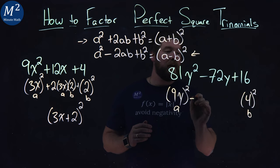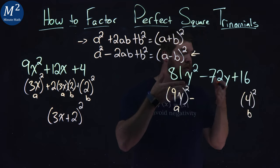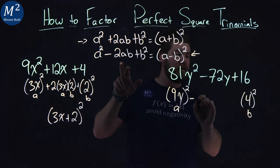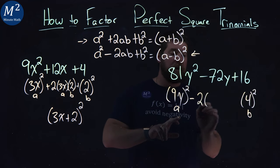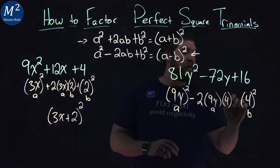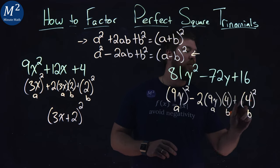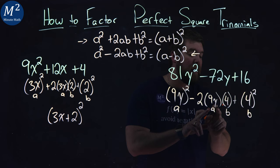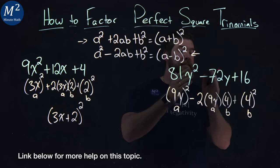Does it line up when we have 72y? Using our formula here, 2 times an a value, 9y, times a b value, which is 4, and then we have plus 4².